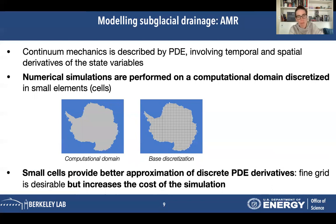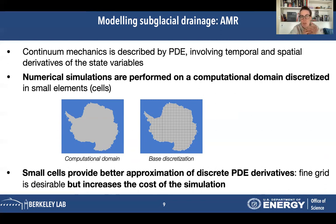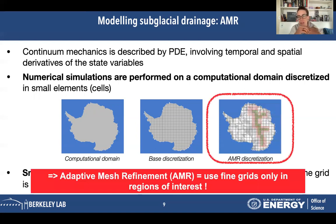Let's stop for a minute and talk about AMR. When we perform numerical simulations, we have a computational domain that we discretize in order to compute whatever we're interested in. If we want sub-kilometer resolution in some regions of interest, using the same discretization everywhere would produce so many cells and computations that it would take forever. So one way to deal with that is adaptive mesh refinement, which uses fine grid patches on top of the base discretization only where we need more detail.